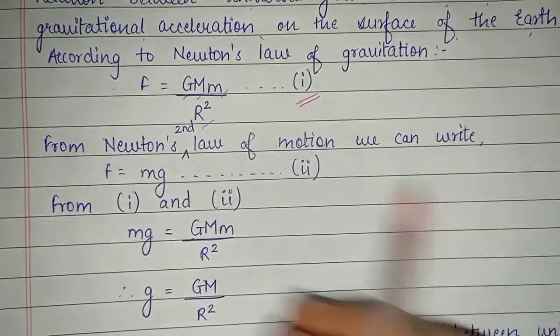From Newton's law: F = GMm/r². From Newton's second law: F = mg. Equating both, acceleration due to gravity g = GM/r². This represents the relation between universal gravitational constant G and gravitational acceleration g on the surface of Earth.